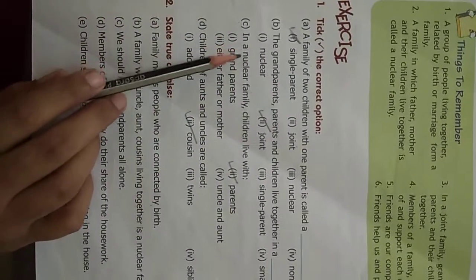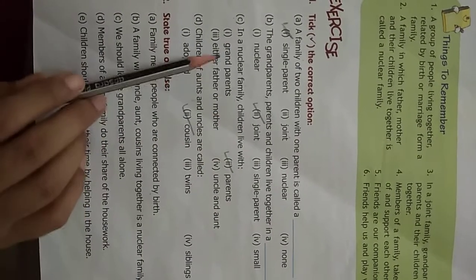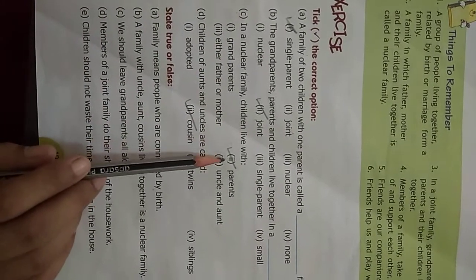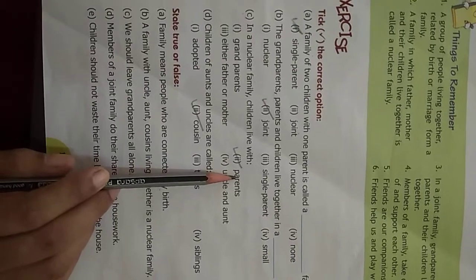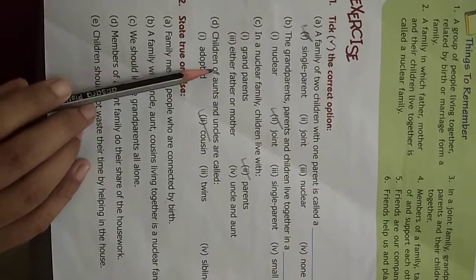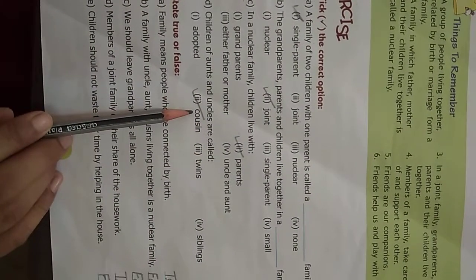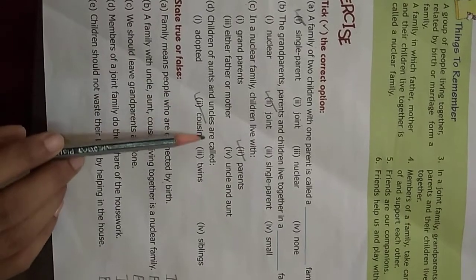Next one, in a nuclear family, children live with parents. So, you have to tick on parents. Next one, children of aunts and uncles are called cousins. So, you have to tick on cousins.